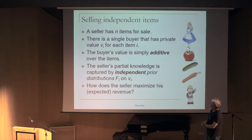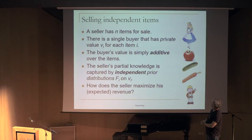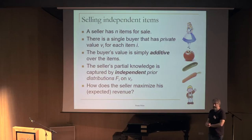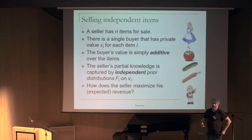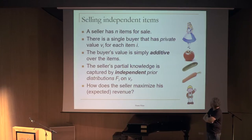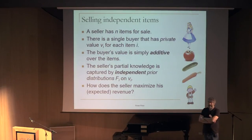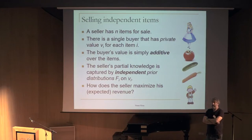The buyer has a simple value for each one of the items — these are indivisible items. For simplicity, we assume the buyer's valuation is additive: if the buyer is willing to pay three for a tomato and four for a cucumber, and he gets both, it's worth seven to him.